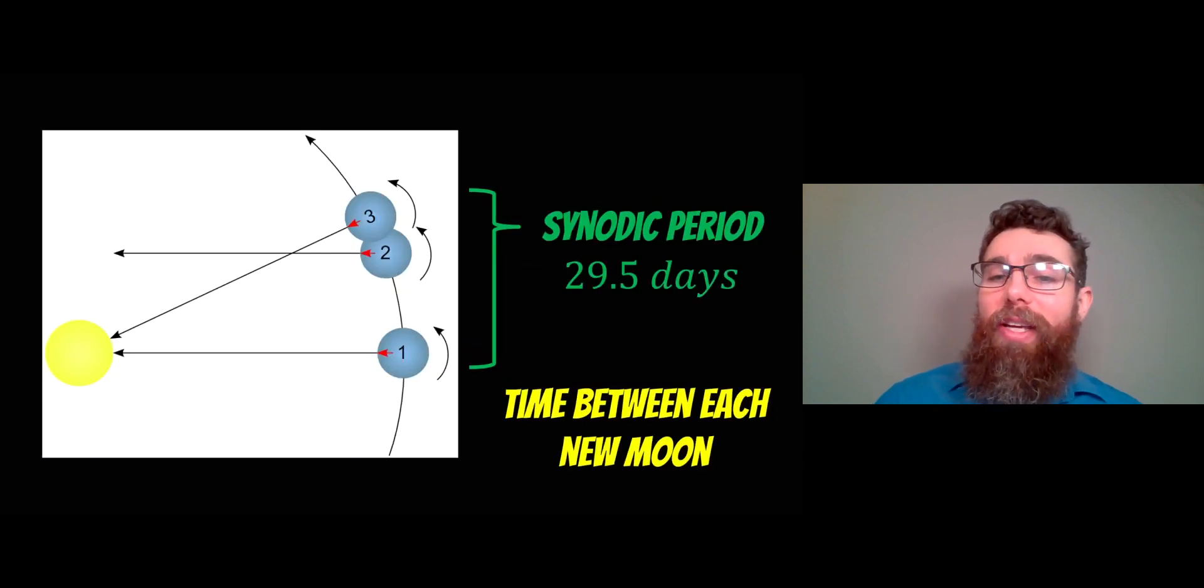It's not quite as straightforward as that because there are two different periods associated with the Moon. The synodic period is 29.5 days, and this is the time between each new moon, the lunar phase.